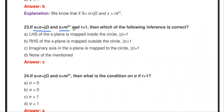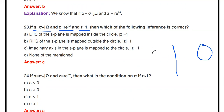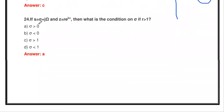Similarly, if s = σ + jω, z = r·e^(jω), and r = 1, which inference is correct? The radius r = 1 means the imaginary axis in the S-plane is mapped to the unit circle. If poles are located on the imaginary axis, those values are mapped onto the unit circle. The correct answer is: the imaginary axis in the S-plane is mapped to the circle |z| = 1.